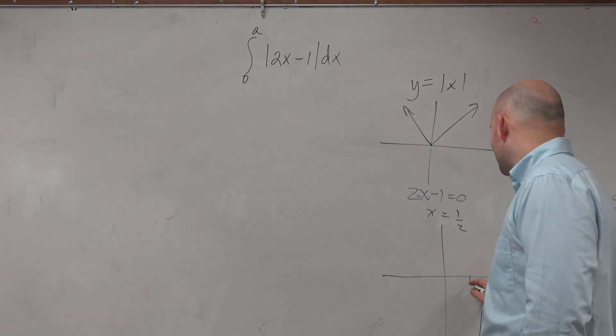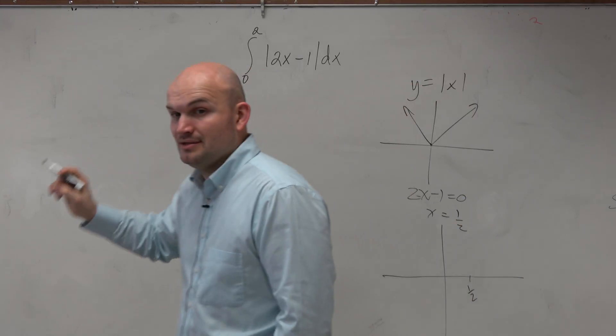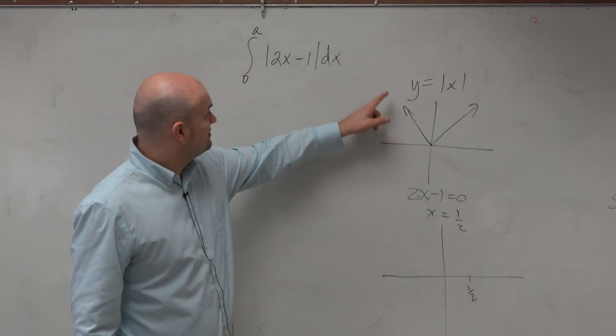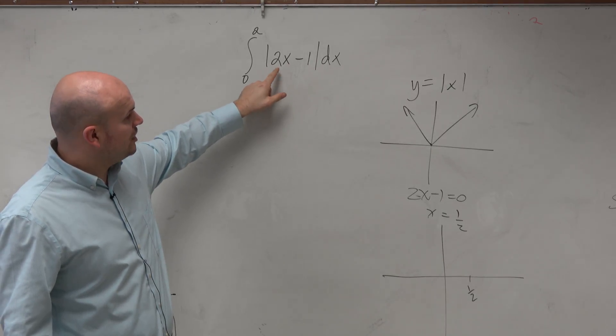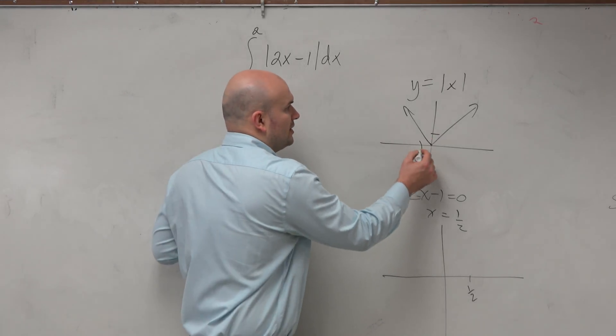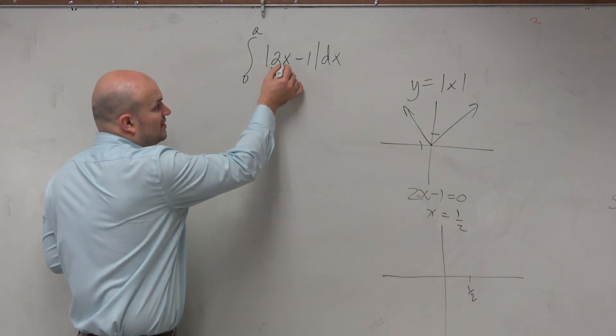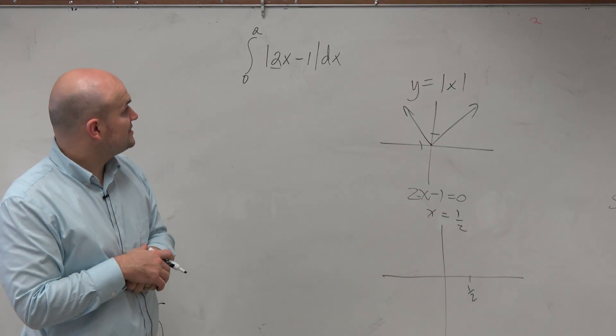So this graph is actually crossing at 1 half. And then the slope is not 1 like it was here. It's not up 1 over 1. Now you have kind of a new slope of 2, so it's like up 2 over 1.